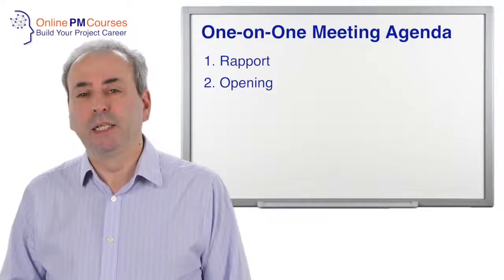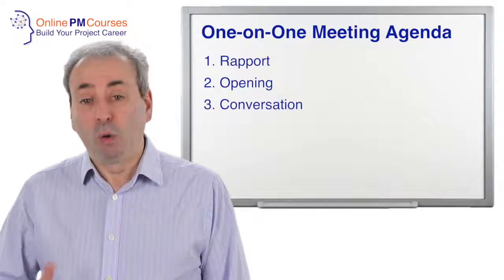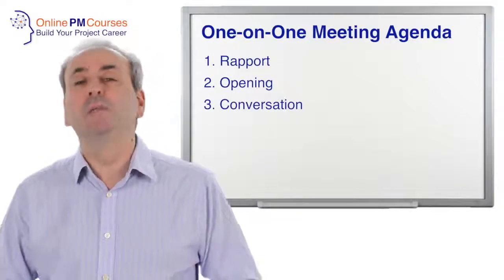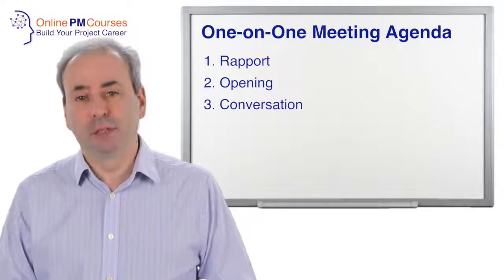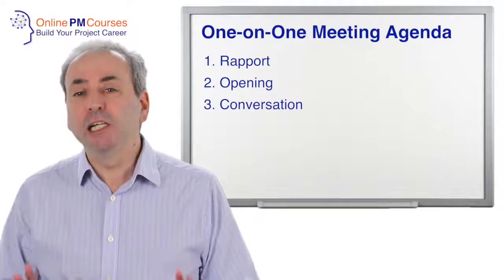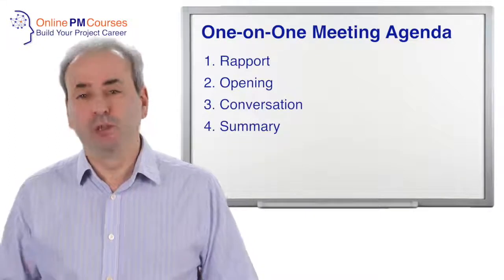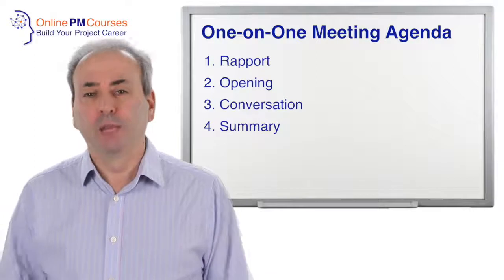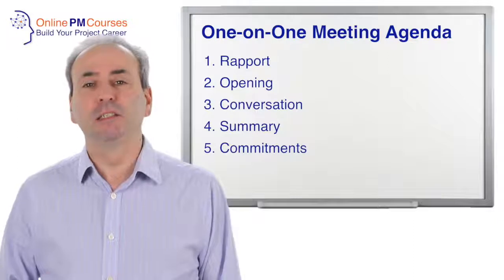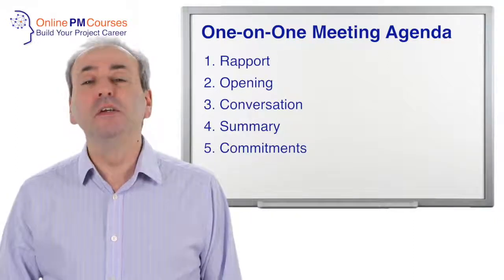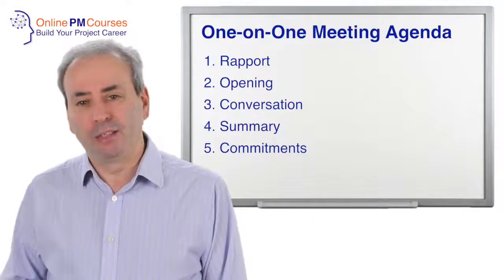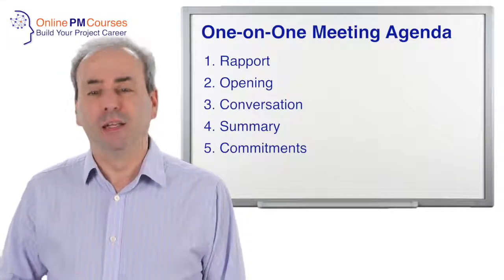The third stage of your meeting is the conversation, or series of conversations, that make up the bulk of your meeting. This is where you achieve the outcomes you set for yourselves. Follow this with stage four: a short, succinct summary of what you've discussed and what you've agreed. The fifth and final stage is where you confirm any commitments you've made and the actions you plan to take, including the work you'll do to set up the next one-on-one meeting in the series.